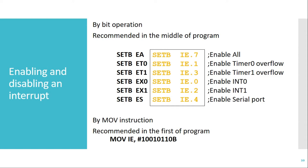We can enable or disable interrupts by two methods. The first method is by bit operation, which is recommended in the middle of program execution. For example, instructions like SETB EA to enable all interrupts, or SETB ET0 to enable the timer 0 overflow interrupt. The second method is to use the MOV instruction, which is generally recommended at the beginning of the program. For example: MOV IE, #10010110B — this binary value is transferred to the IE SFR to enable particular interrupts and disable others.